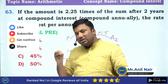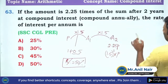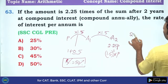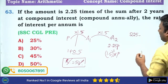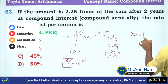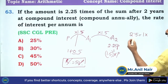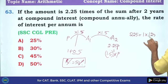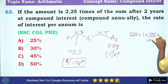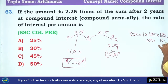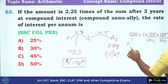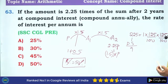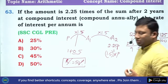Even if you forget this concept, you can use the concept of digital sum. The final value is 2.25 and the initial value is 1. What is the rate of interest? If I take 125%, on 100 there is an increase of 125. The digital sum of 2.25 is 9. Testing 125% — digital sum of 125 is 8. Eight 8s are 64, digital sum is 1. 9 is not equivalent to 1, so this option is out.